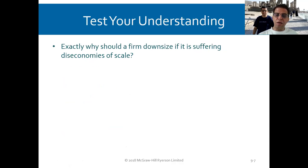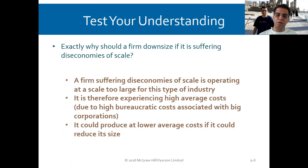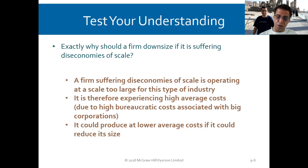Why should a firm downsize if it is suffering from diseconomies of scale? A firm suffering from diseconomies of scale is operating at a scale too large for its type of industry. It is therefore experiencing high average cost due to high bureaucratic costs associated with a large corporation. It could produce at a lower average cost if it could reduce its size.